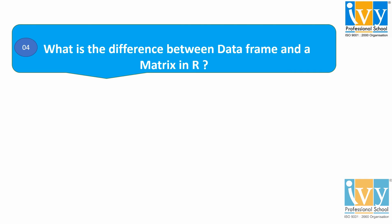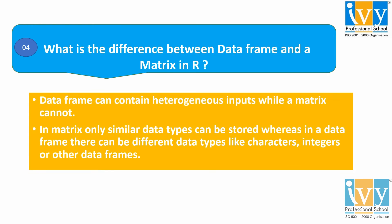Moving to the fourth question: what is the difference between a DataFrame and a matrix in R? Both a matrix and a DataFrame are collections of data arranged in a two-dimensional organization. DataFrames contain heterogeneous input while a matrix contains homogeneous inputs — all of the same type. In a matrix only similar data types can be stored, whereas in a DataFrame there can be different data types like characters, integers, or other data types.